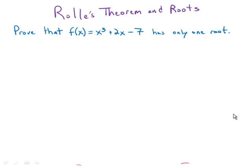Rolle's Theorem and Roots. Prove that the function f(x) equals x cubed plus 2x minus 7 has only one real root.